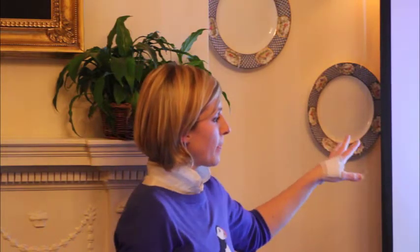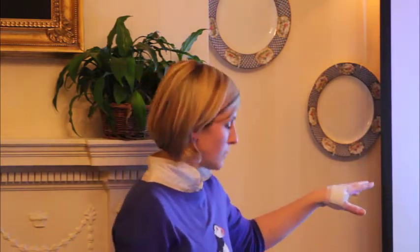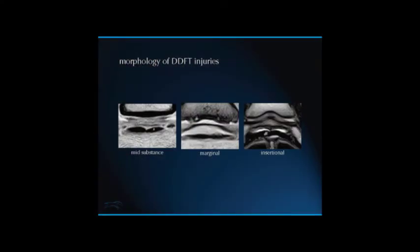Looking at injuries more specifically, this is a mid-substance injury here — classically what we would call a core lesion. Importantly, the margins of the tendon are intact. Compare that to this injury here. These are very nasty injuries. When we have that sort of prolapse of tendon fibres within the navicular bursa — this is the navicular bursa here, that's fluid in the navicular bursa — these injuries cause a lot of inflammation in the bursa. They are secreting matrix proteins that are causing inflammation. Whenever you leave that fibrillated tendon with prolapsed fibres, you get this ongoing persistent bursa inflammation, which can be very, very painful.